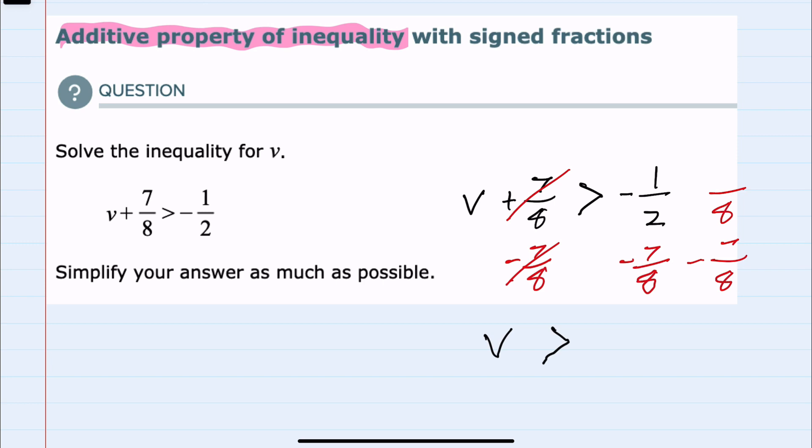Our bottom fraction doesn't need to change, negative 7 eighths. The negative 1 half, though, I would have to multiply the top and bottom by 4, which would give me a negative 4 eighths.